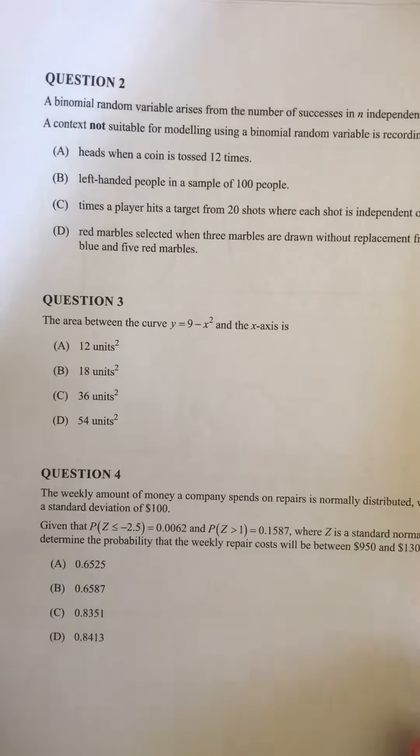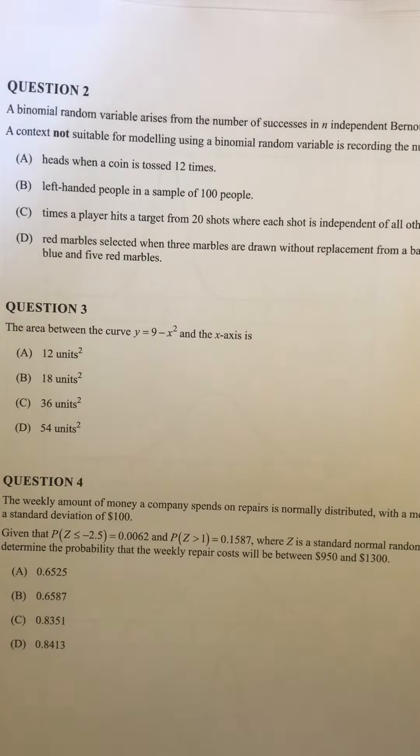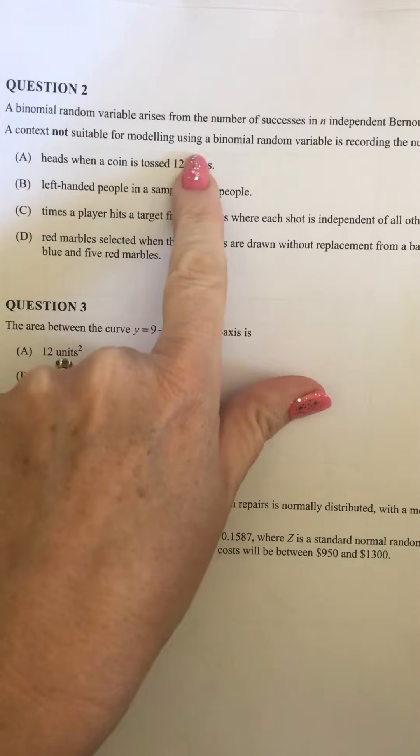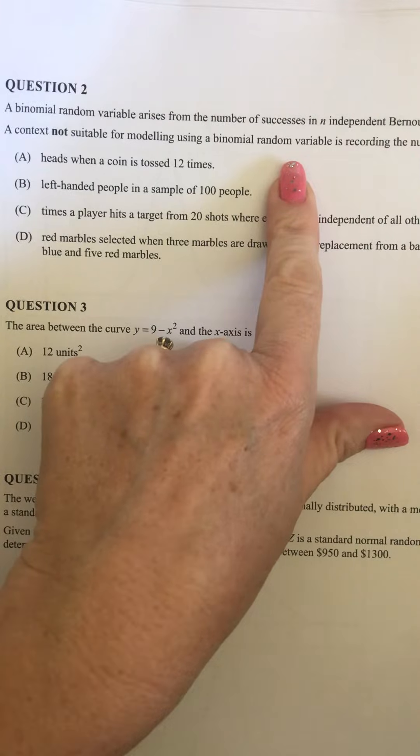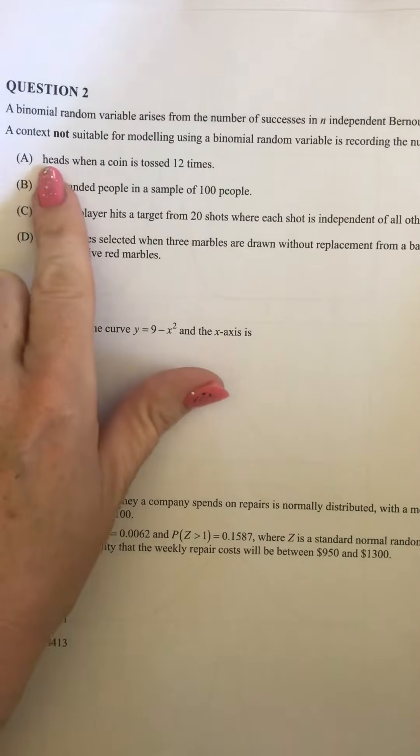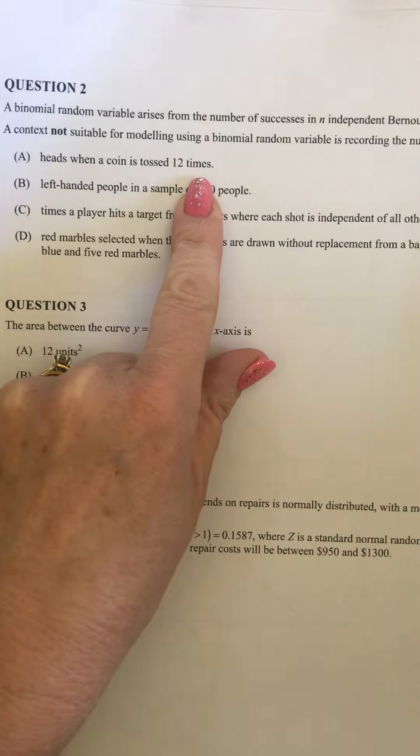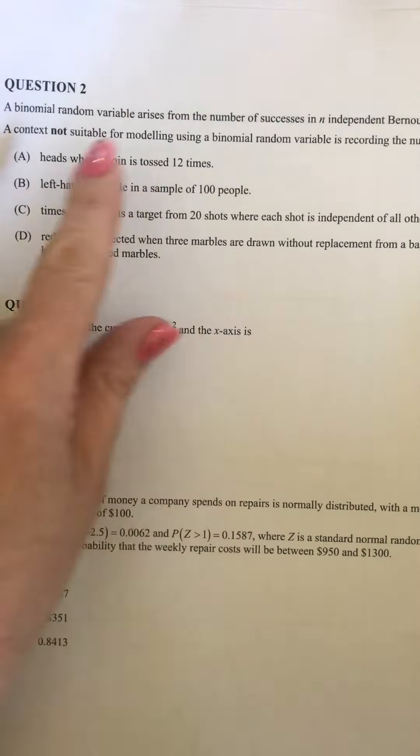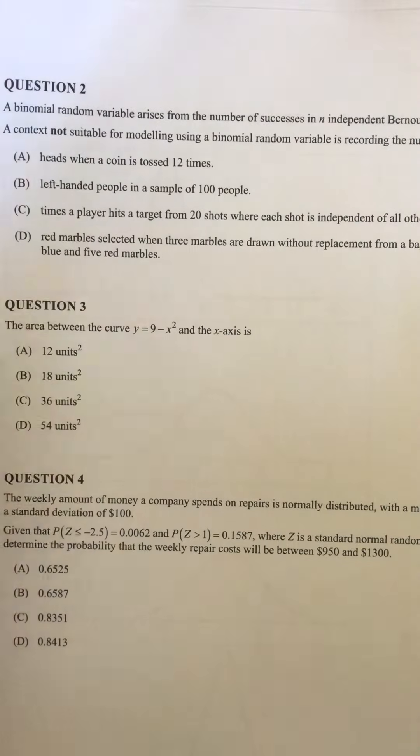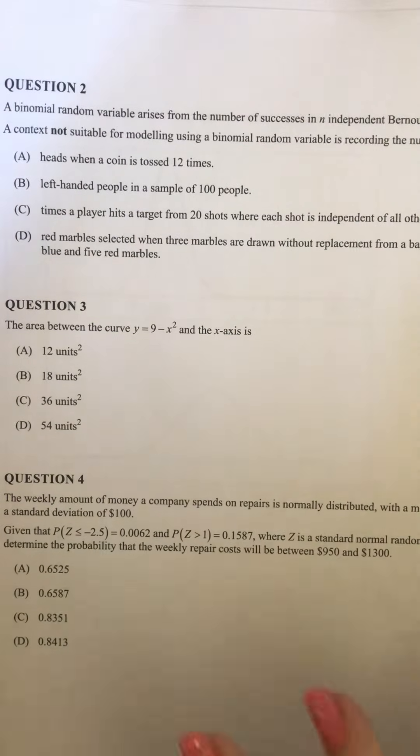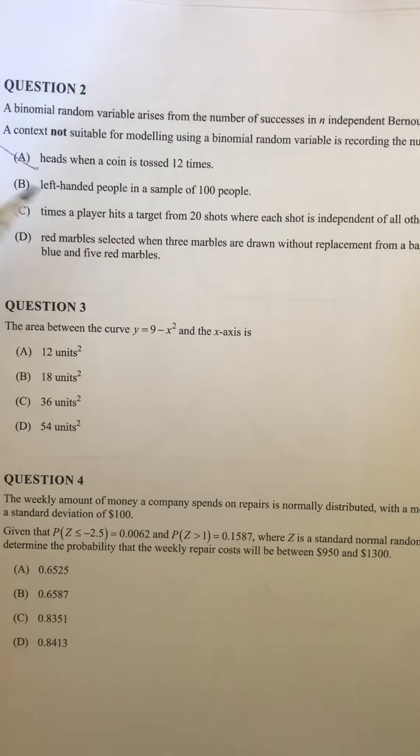Going on to question two. We've got a binomial random variable arises from the number of successes of N independent Bernoulli trials. A context not suitable for modelling using a binomial random variable is recording the number of... For Bernoulli we need a set probability, a set number of trials, probability remains the same throughout the trials. So here we've got a number of trials, we've got probability of heads for a coin, so the probability is staying the same. So that would work for a Bernoulli trial and a binomial random variable.